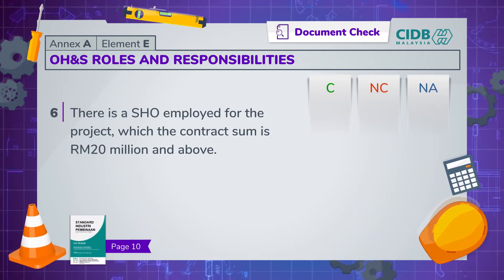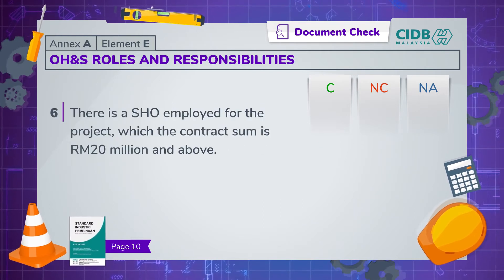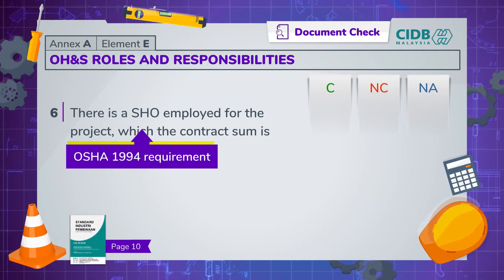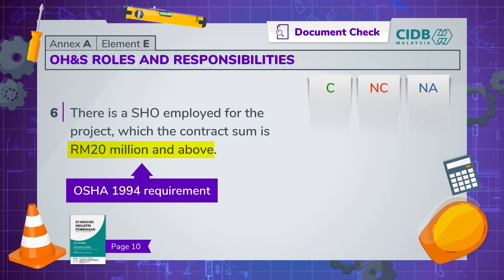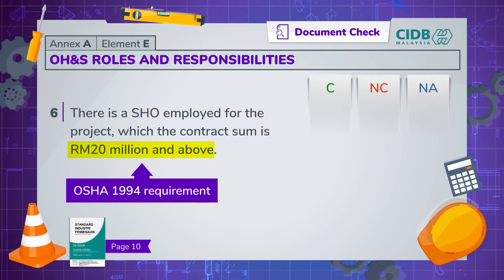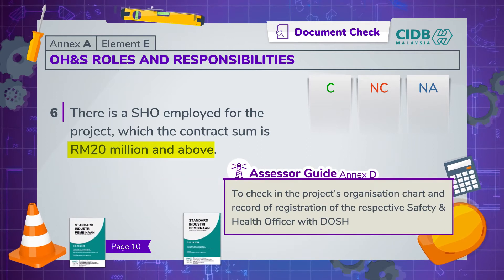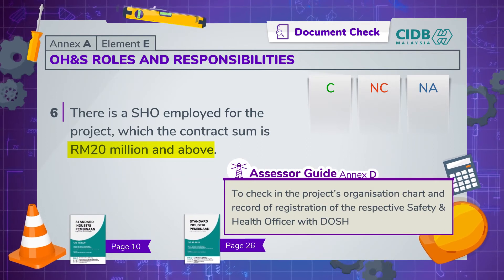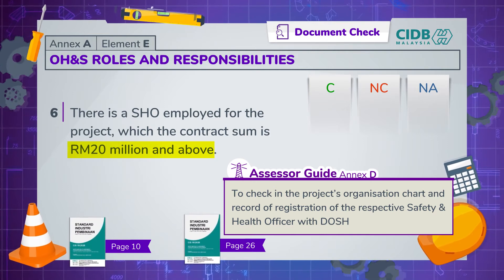The final question in element E only applies if the contract sum is 20 million ringgit or more. Under OSHA 1994, it's mandatory for a project with a contract sum of 20 million ringgit or more to engage a safety and health officer. If this applies, check to ensure that the safety and health officer is in the organisation chart and view the record of the SHO registration with DOSH.